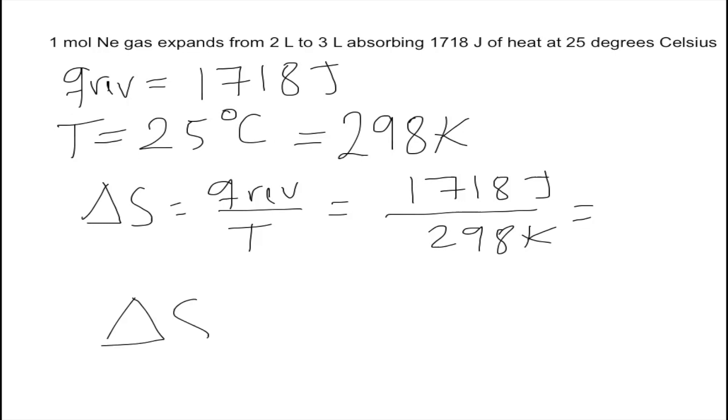The entropy change for the system is 5.76 joules per Kelvin, which is the same result as using the microstate definition of entropy.